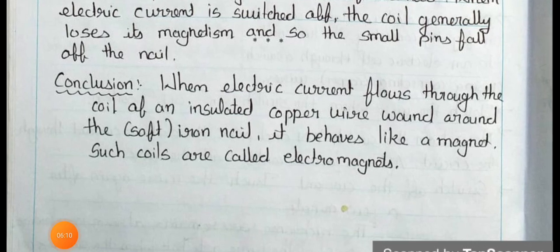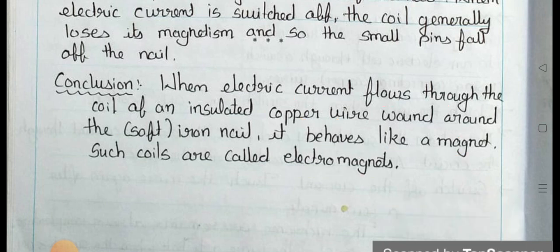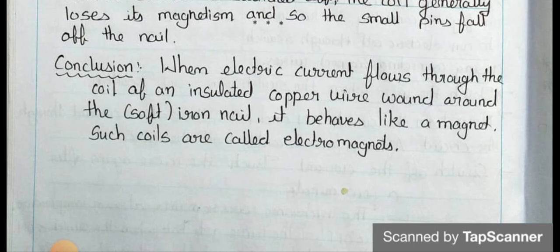Now see the conclusion: When electric current flows through the coil of an insulated copper wire wound around the soft iron nail, it behaves like a magnet. Such coils are called electromagnets. Here your chapter is completed and we will see the next chapter in the next video. Stay safe, stay healthy. Okay, bye.